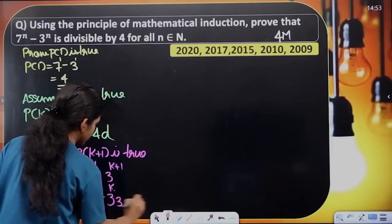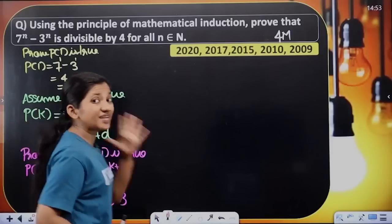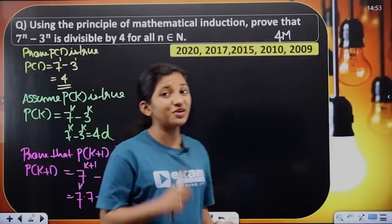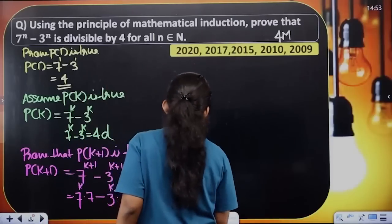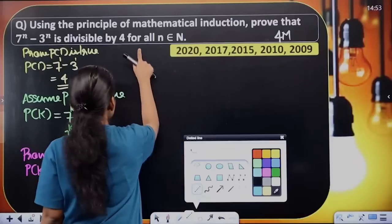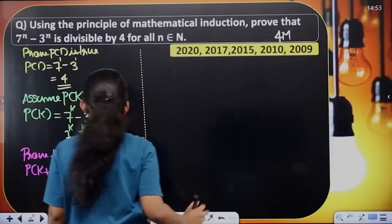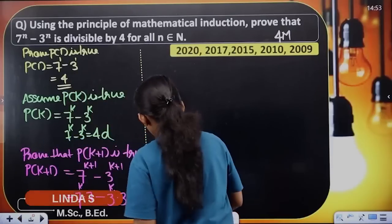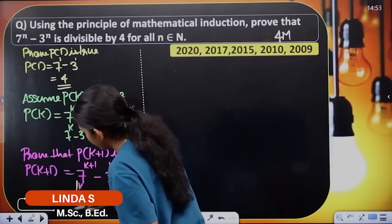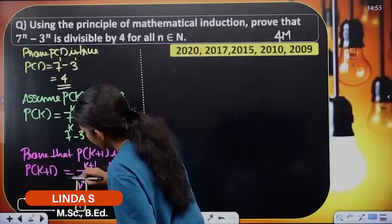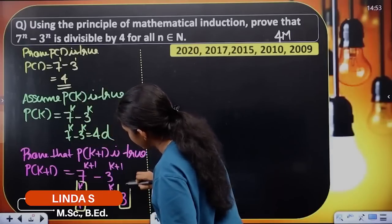Next we will split this up. 7 raised to k plus 1 is 7 raised to k into 7. So here 7 raised to k into 7 minus 3 raised to k into 3. The next step is to mark the first term and last term. The first term is 7 raised to k and the last term is 3.